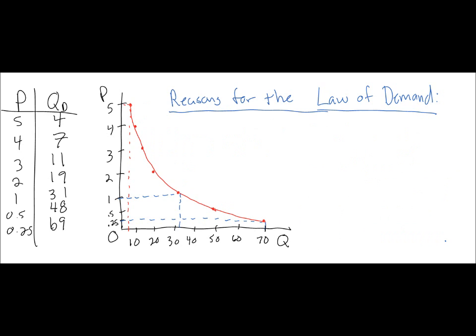Now, it may seem like common sense that at lower prices people wish to buy greater quantities of goods and services. But as economists, we always have to make things a little bit more complicated than they are in real life. So economists have come up with three economic reasons for the law of demand, and I'll call these the economic rationale of the inverse relationship between the price and the quantity demanded.